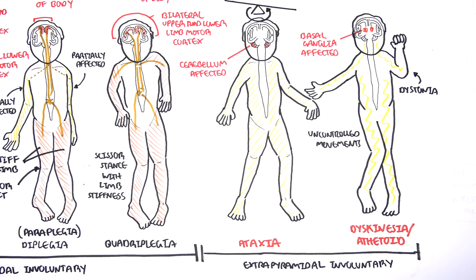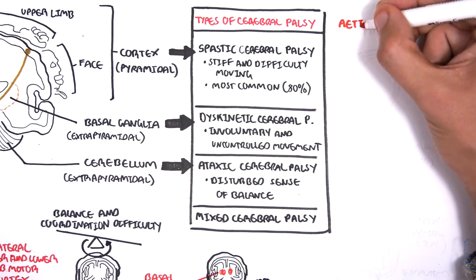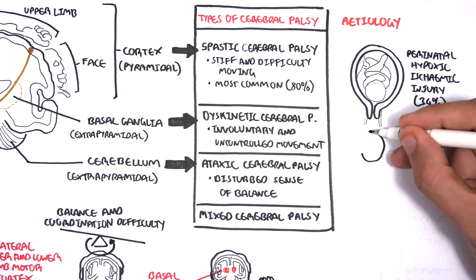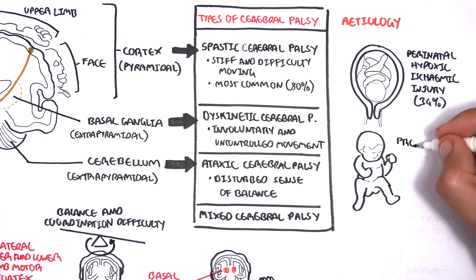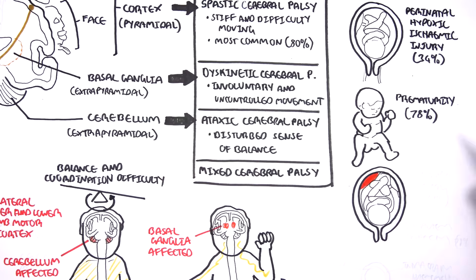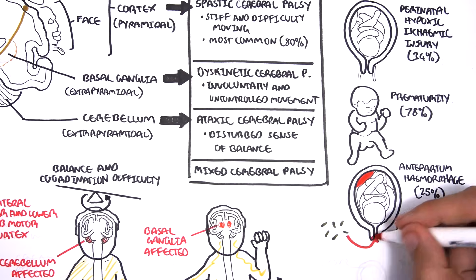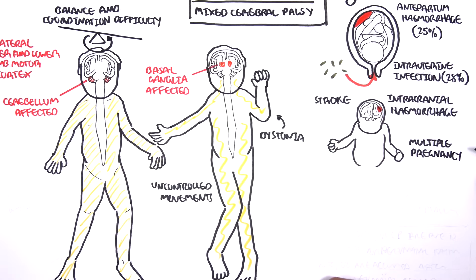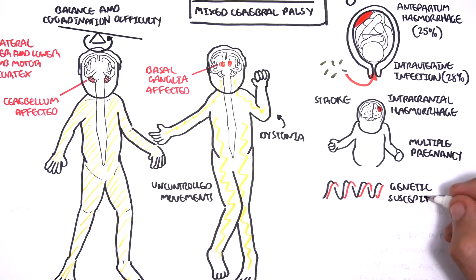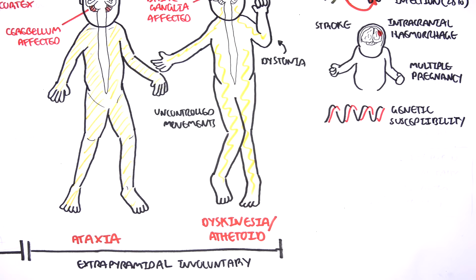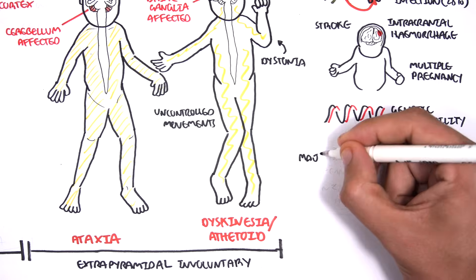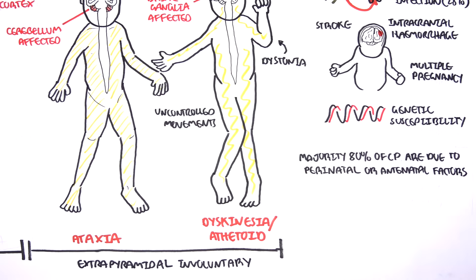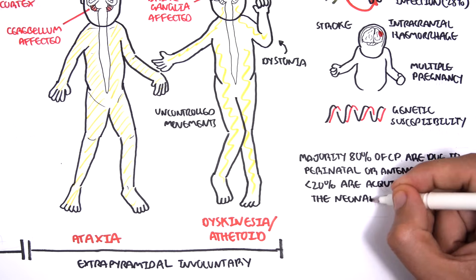What causes cerebral palsy? There is no exact cause, but a number of factors are thought to have a relationship to it. These include perinatal hypoxic-ischemic injury; prematurity, which is seen in the majority of cerebral palsy patients; antepartum haemorrhage during pregnancy; intrauterine infections; intracranial haemorrhage in the fetus or fetal stroke; multiple pregnancies; and possibly genetic susceptibility. Notably, 80% of cerebral palsy cases are due to perinatal or antenatal factors, with only less than 20% acquired after the neonatal period.